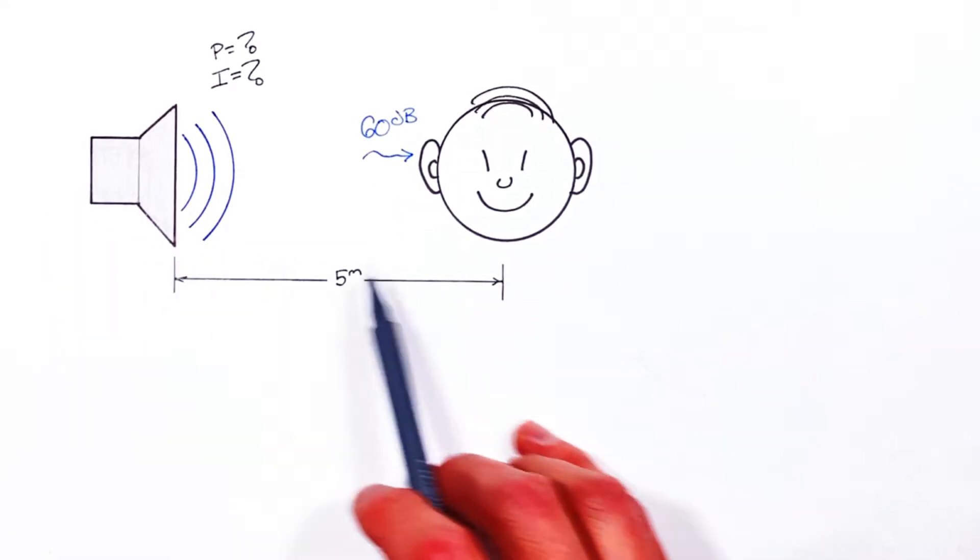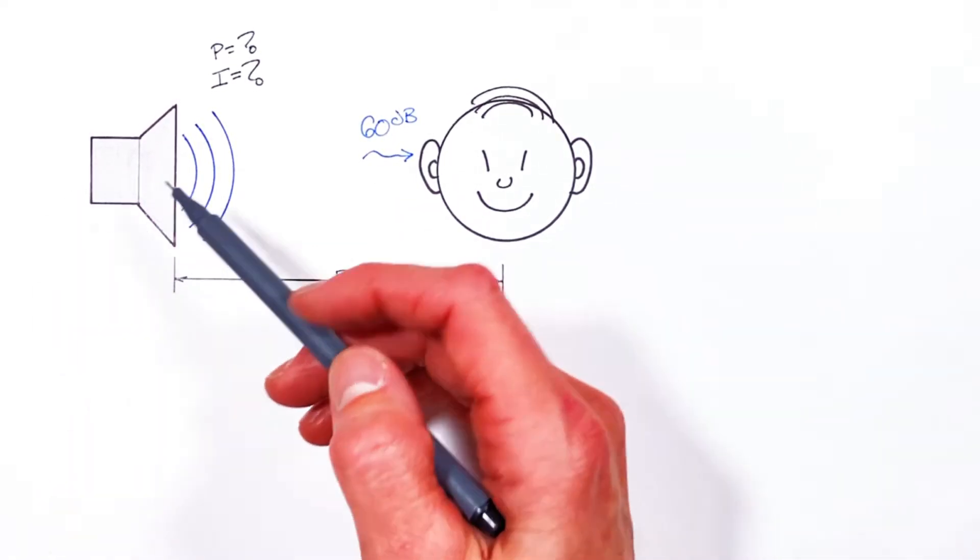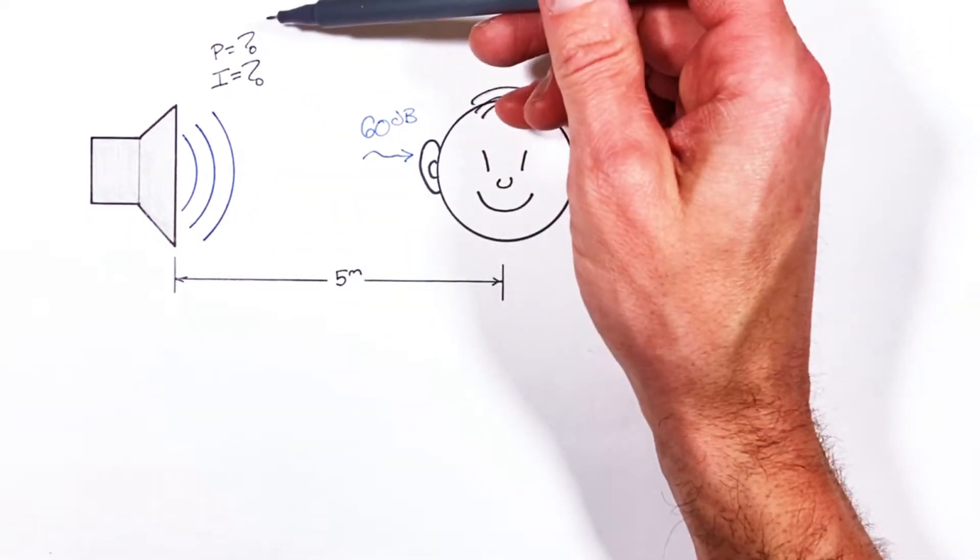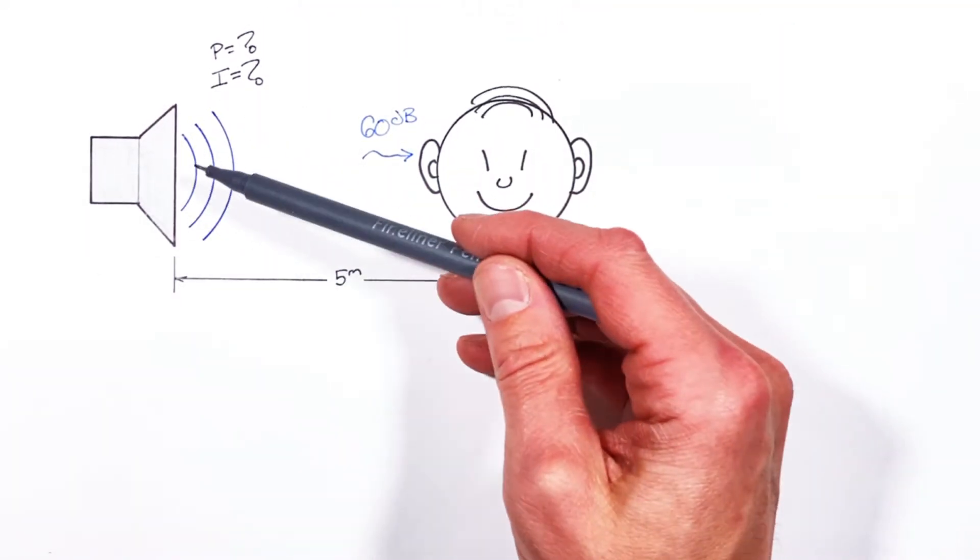That sound is coming from a speaker which is located five meters away and in this problem we're gonna solve for both the power and intensity of sound coming from the speaker.